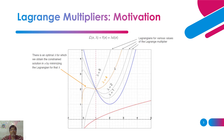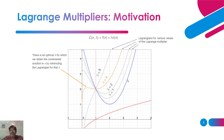This is an example — the same example used before. This is our objective function shown as the blue line, and this is our inequality constraint. With respect to this, the feasible region is this much. My function covers this region, so I introduce a multiplier and convert the nonlinear function into a linear function.